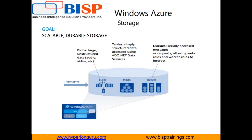To know more about Blob and Table, you can go through my existing videos on Blob Storage and on Table Storage. This video will mainly concentrate on Queues. Queues are serially accessed message or request allowing Web Roles and Worker Roles to interact. Whenever a new message is added in a Queue, the Web Role and Worker Roles will interact with that Queue and pull the messages from it one by one.